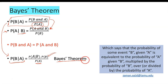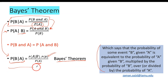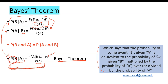How do we read it? The probability of some event B given A is equivalent to the probability of A given B, multiplied by the probability of B, divided by the probability of A. You don't need to memorize this statement — if you look at this formula, you can easily read it in any situation. That's what we call Bayes' theorem.